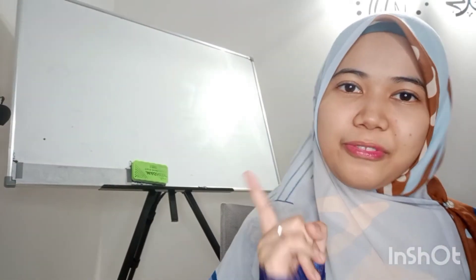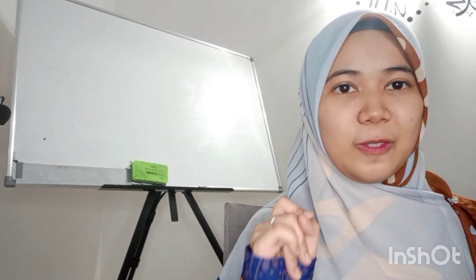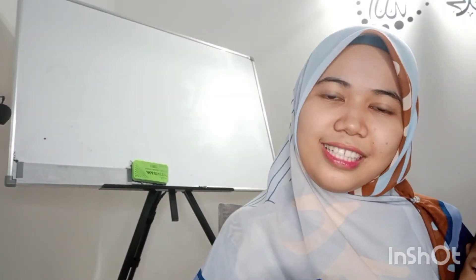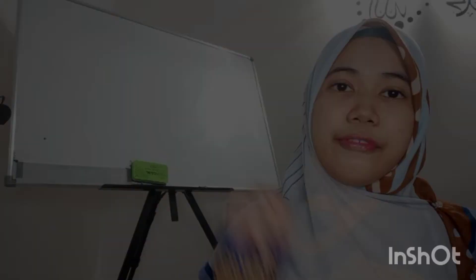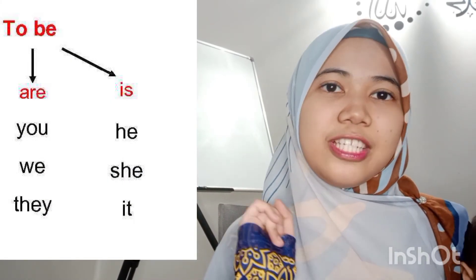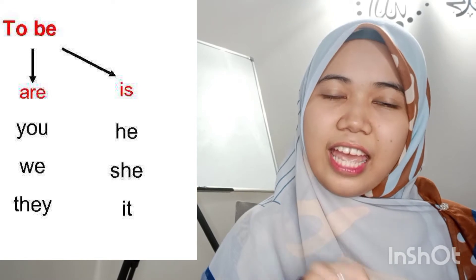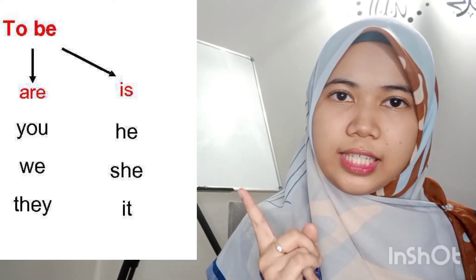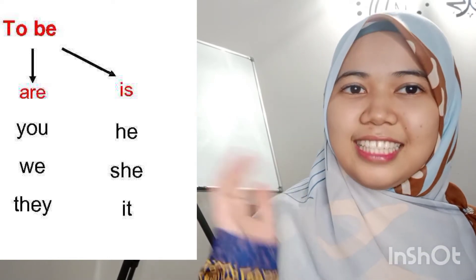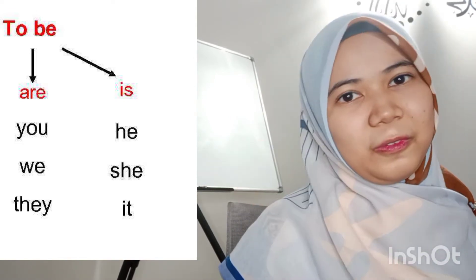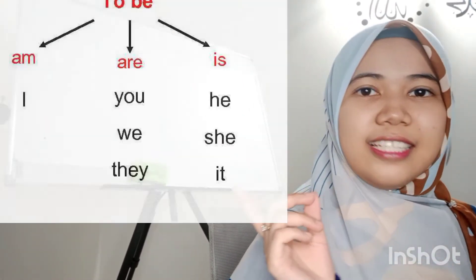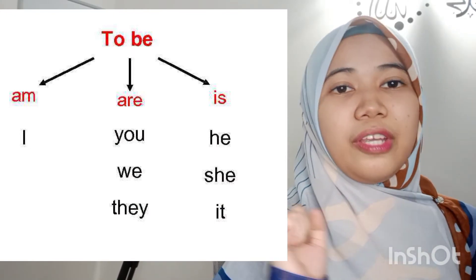Do you still remember what the verb to be is for singular and plural nouns? It's okay if you can't remember — let's discuss together. For singular nouns — he, she, it — we must use 'is.' And for plural nouns — they, we, and you — we must use 'are.' For 'I,' it's special: we use 'am.'